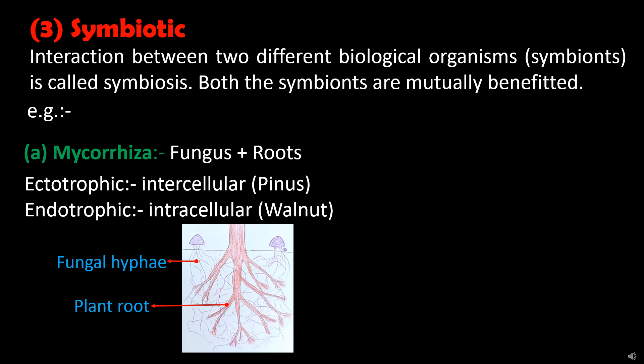Mycorrhiza can be of two types: ectotrophic mycorrhiza and endotrophic mycorrhiza. In ectotrophic mycorrhiza, fungal hyphae remain in the intercellular spaces. Some of these hyphae develop haustoria and penetrate the cells of the host to obtain nutrients — such type is called endotrophic mycorrhiza. Ectotrophic mycorrhiza is found in Pinus, and endotrophic mycorrhiza is found in the walnut plant.